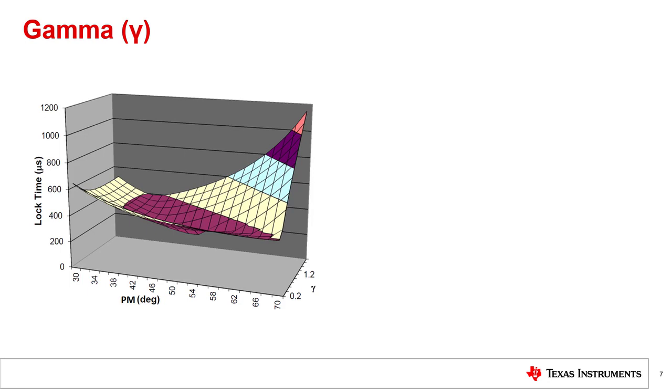The 3D graph illustrates how lock time varies with gamma and phase margin. The lock time was simulated based on a second order loop filter with a 10 kHz loop bandwidth and a frequency jump from 800 to 900 MHz. Gamma is dependent on the ratio of the zero to the sum of the poles in the transfer function. In the equation, omega_c denotes the loop bandwidth in radians. Kappa is the sum of the poles in the loop filter. In the case of a third order loop filter, T4 will be zero, and in the case of a second order loop filter, both T3 and T4 will be zero.